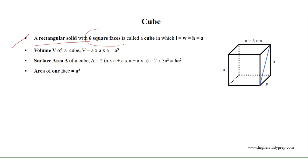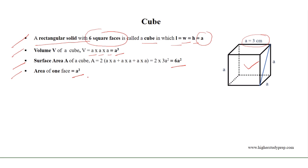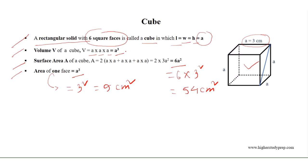A rectangular solid with 6 square faces is called a cube, in which length equals width equals height. Let them all equal A, where A equals 3 centimeters for this figure. So the volume of the cube equals A × A × A, which equals A³, where A is the length of each edge. The surface area equals 6A², and the area of one face equals A². As A equals 3 centimeters, the area of one face equals 3² equals 9 square centimeters. The surface area of the cube equals 6 times 3² equals 54 square centimeters. And the volume of the cube equals 3³ equals 27 cubic centimeters.